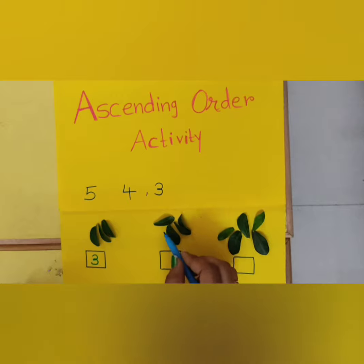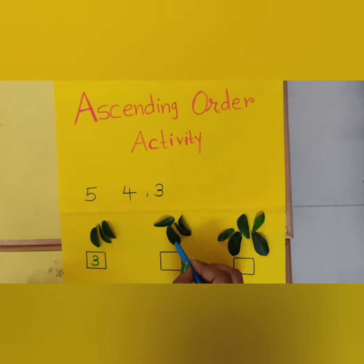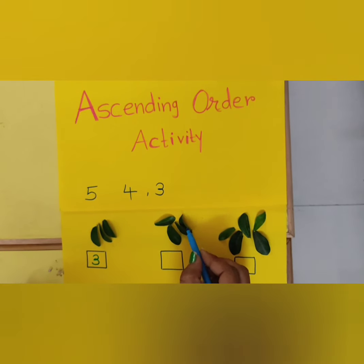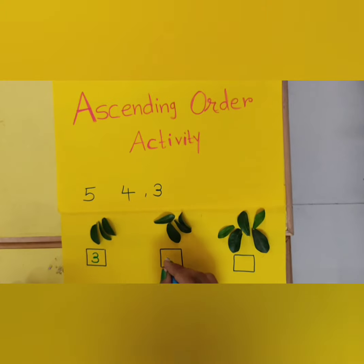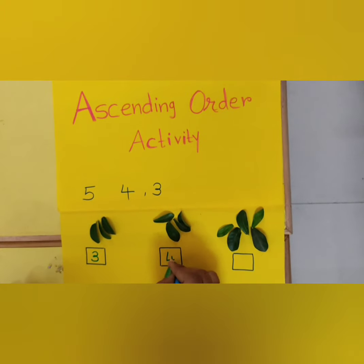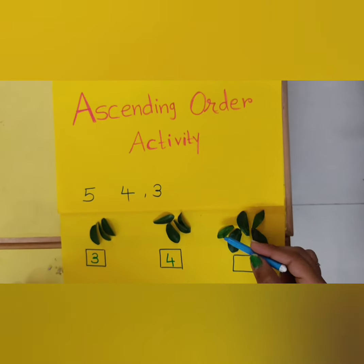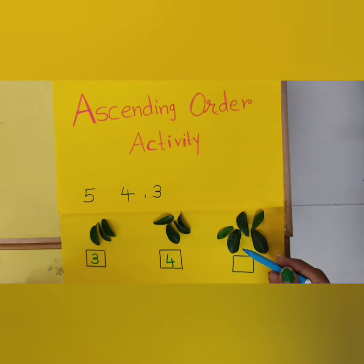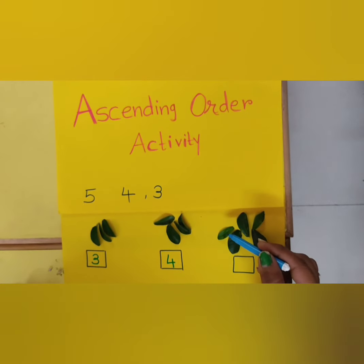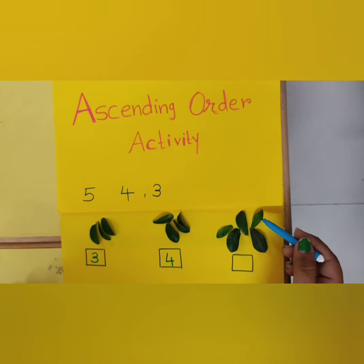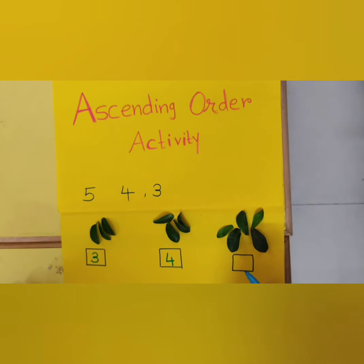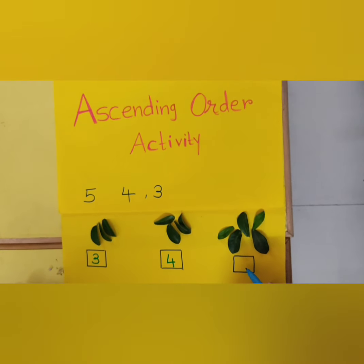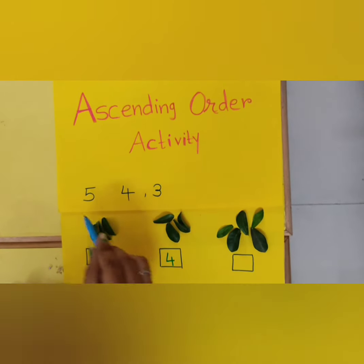यहाँ पे कितने leaves हैं? 1, 2, 3, 4. तो हम 4 लिखेंगे. How many leaves? Let's start counting — 1, 2, 3, 4, 5. तो last में हम 5 लिखेंगे.